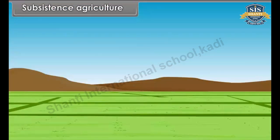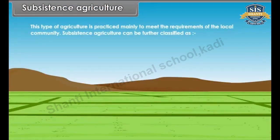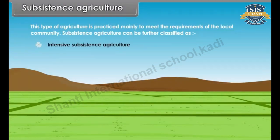Subsistence agriculture is practiced mainly to meet the requirements of the local community. Subsistence agriculture can be further classified as intensive subsistence agriculture and primitive subsistence agriculture.